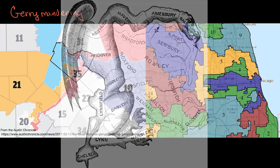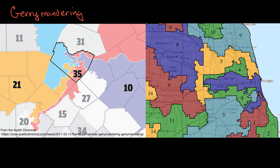Let's go back to the two districts we looked at and think about the implications — who does the gerrymandering benefit? In the case of Austin, Texas, it's an urban area. Urban areas tend to lean more left, and Austin does lean more Democratic — it's actually more liberal than most urban areas in Texas. But it's surrounded by more rural areas that lean right. So it's advantageous for Republicans to split those Democratic votes amongst these Republican districts.